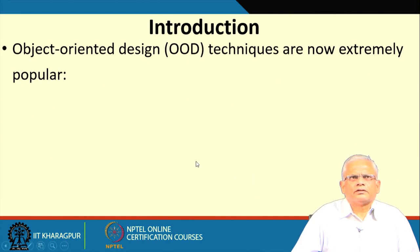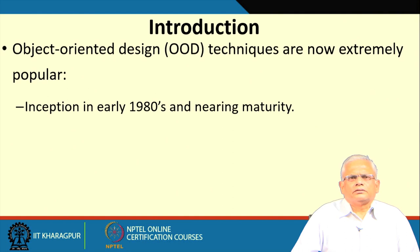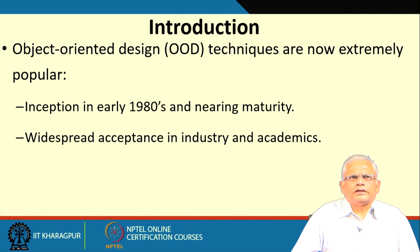Now let us get started with the course. Object oriented design, as you might be knowing, has become extremely popular. It started in early 1980 and is now in a maturity stage, being used as a mature technology. There is widespread acceptance in industry and academics. In industry, many projects get developed using object orientation — both large projects as well as small and embedded projects. In academics, object orientation has come to play a crucial role, not only in computer science but also in other disciplines.